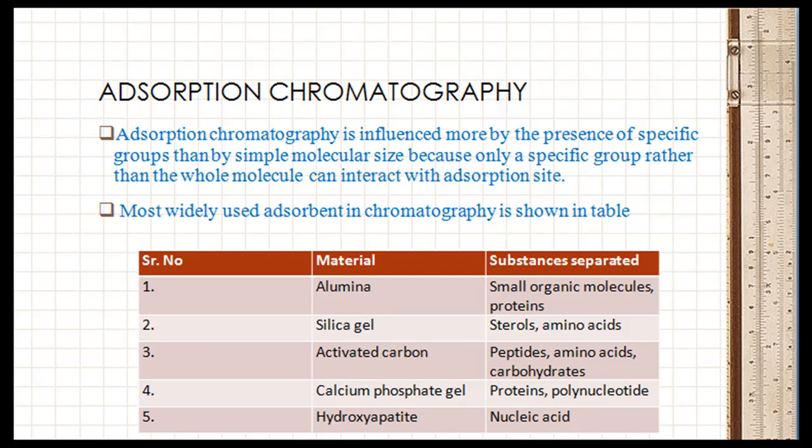The most widely used adsorbents in adsorption chromatography are shown in Table 1. Alumina is used for separation of small organic molecules or proteins. Silica gel is used for separation of sterols and amino acids. Activated carbon can be used for separation of peptides, amino acids, and carbohydrates. Calcium phosphate gels can be used for separation of proteins and polynucleotides. Hydroxyapatite can be used for separation and purification of nucleic acids.